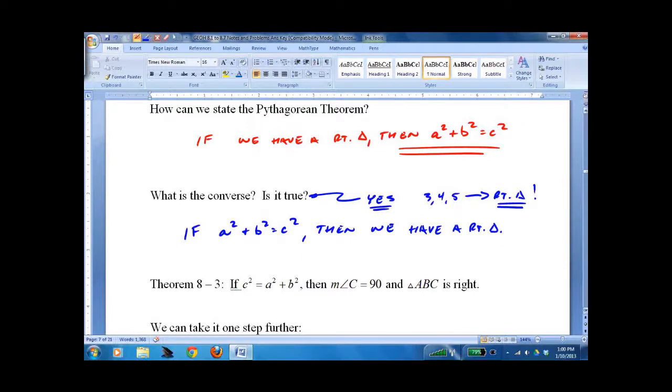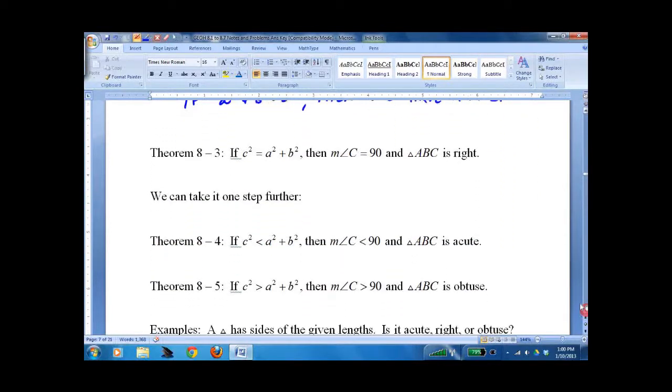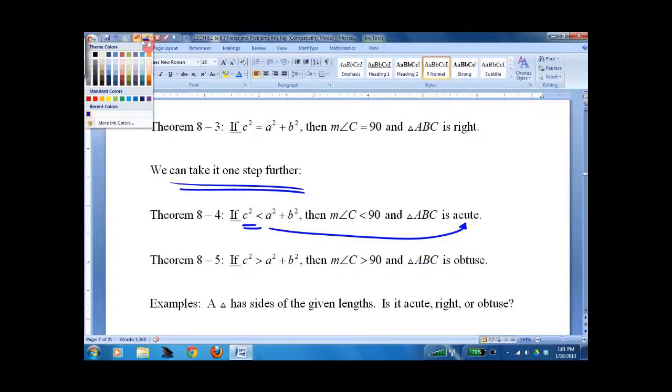Now we can actually take it one step further. If they don't equal, and c-squared is less than, we have an acute triangle. If they don't equal, and c-squared is greater than, we have an obtuse triangle.